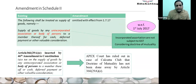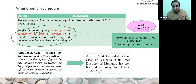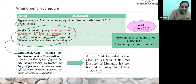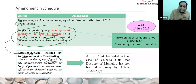There was one para — para 7 of Schedule 2 — talking about supply of goods by an unincorporated association. Supply of goods by the person to the member for cash, deferred payment or any other valuable consideration will be treated as a supply of goods. It was in support of Article 366, Clause 29A, Subclause E, which was inserted by the 46th amendment to the Indian Constitution. A tax on supply of goods by an unincorporated association to the member will be a supply.